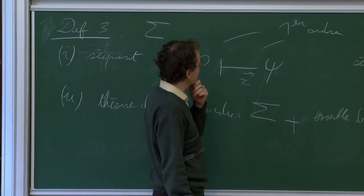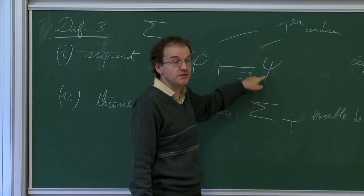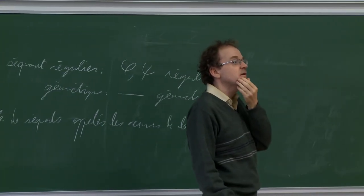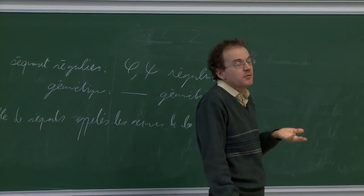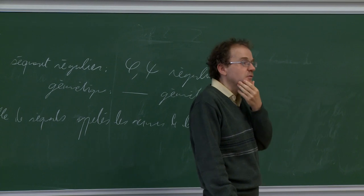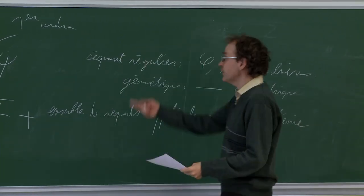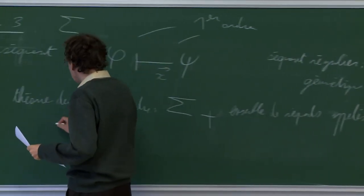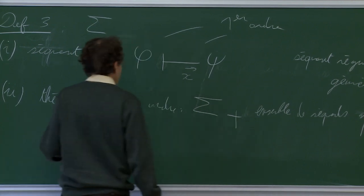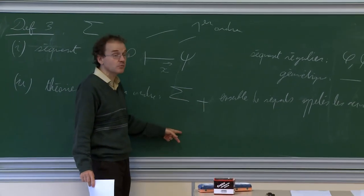In the implications between formulas, a particular case is declaring that a formula is true or false: when you say true implies phi, that means phi is true. A regular theory is one whose axioms are all regular sequents; a geometric theory is one whose axioms are all geometric sequents. These are more particular forms of theory where we require the axioms to have a certain form.